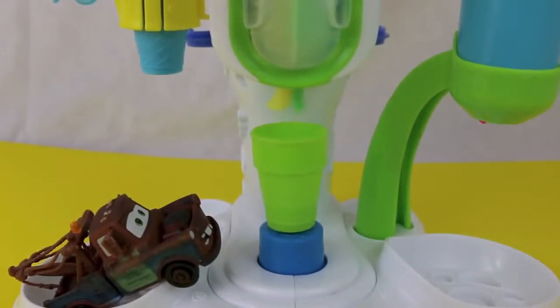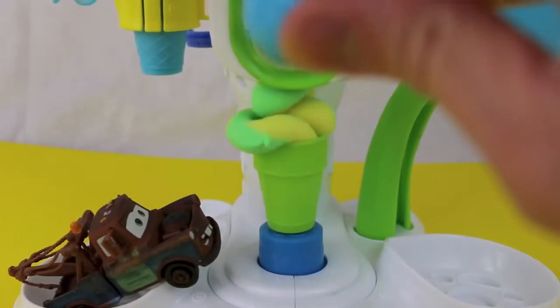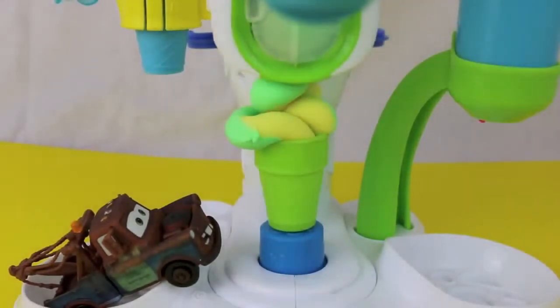I'm going to now press down the lever to dispense the ice cream. And since I loaded the container with both green and yellow Play-Doh, we have a beautiful two-toned ice cream.